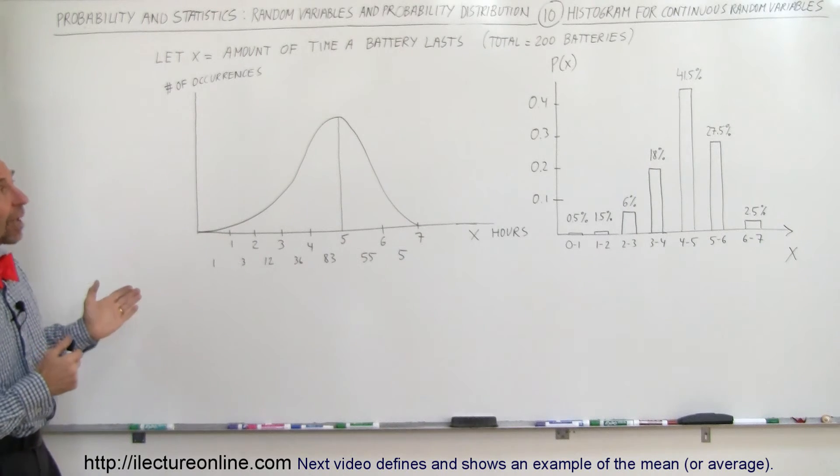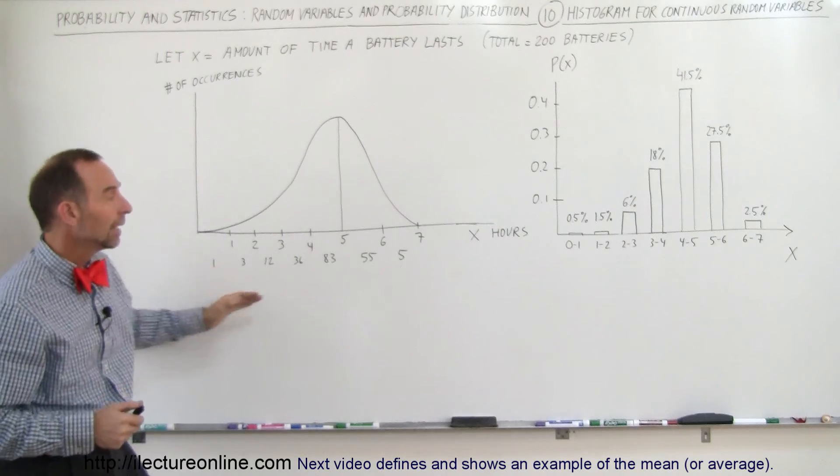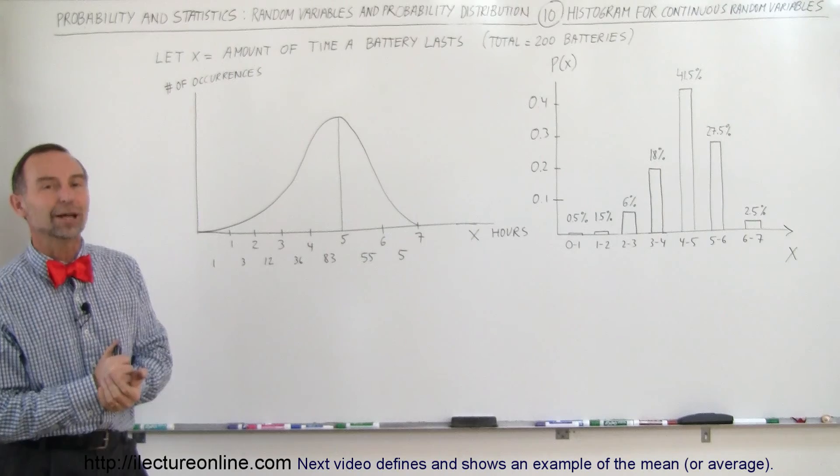Therefore, that was a good example to show you how to handle what we call a continuous random variable and turn that into a discrete set of random variables. That's how we do that.